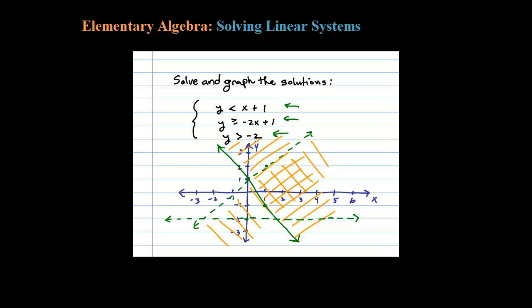And we want to shade in all the y values that are greater than negative two. So if we run a test point, zero zero certainly is greater than negative two, and that's this region up here.